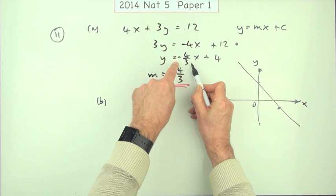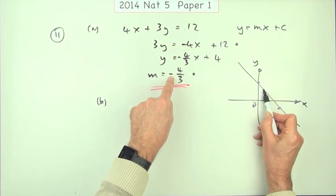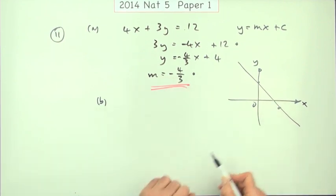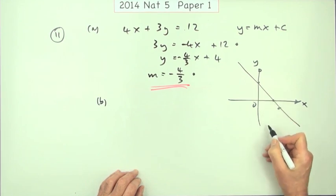Or you could say, if that's the gradient, for each step along you drop 4 thirds. But the question says, where did it cut the x axis? Now where does it cut? That's a point.